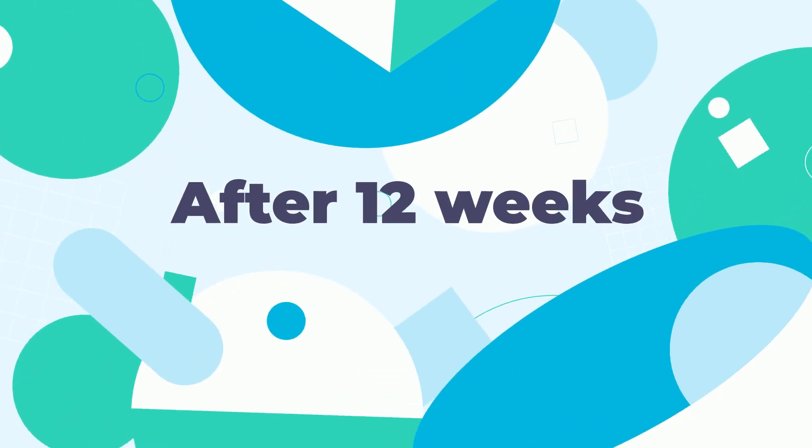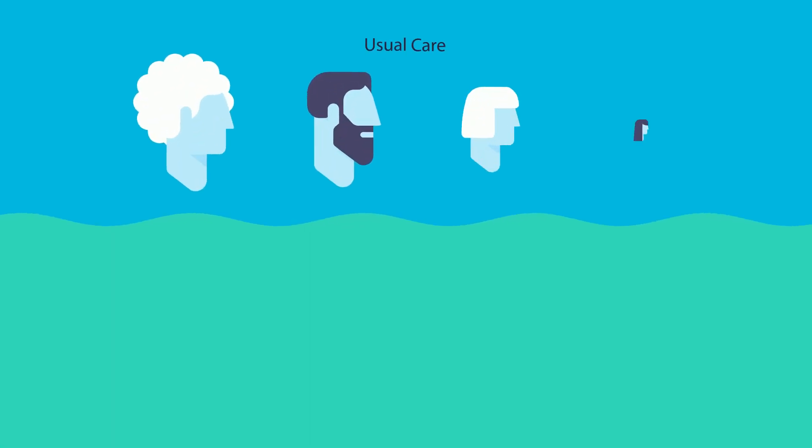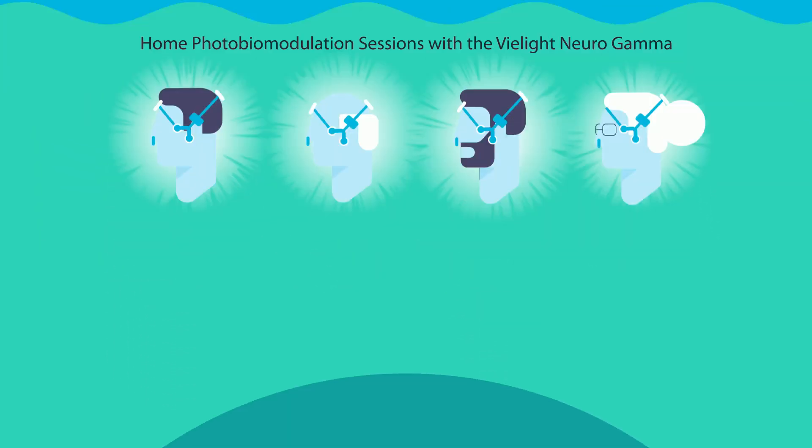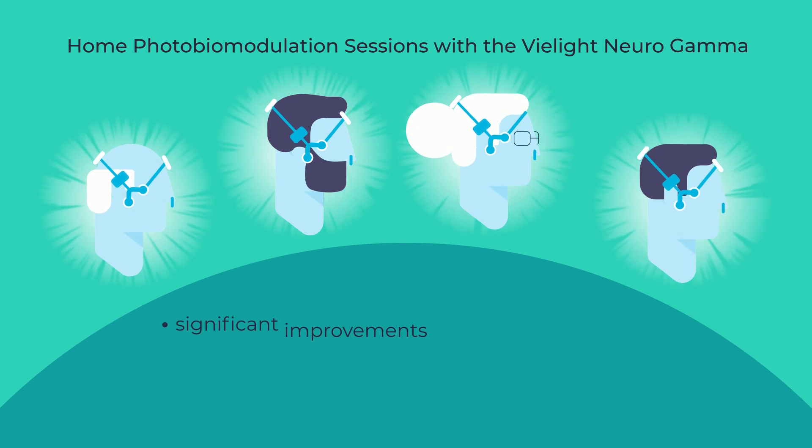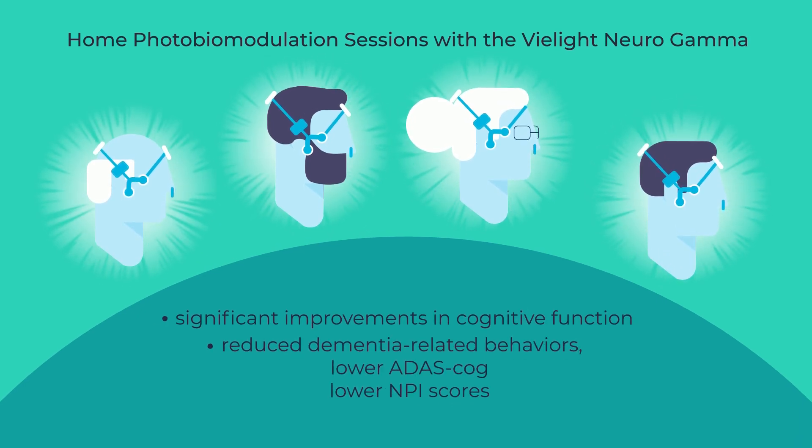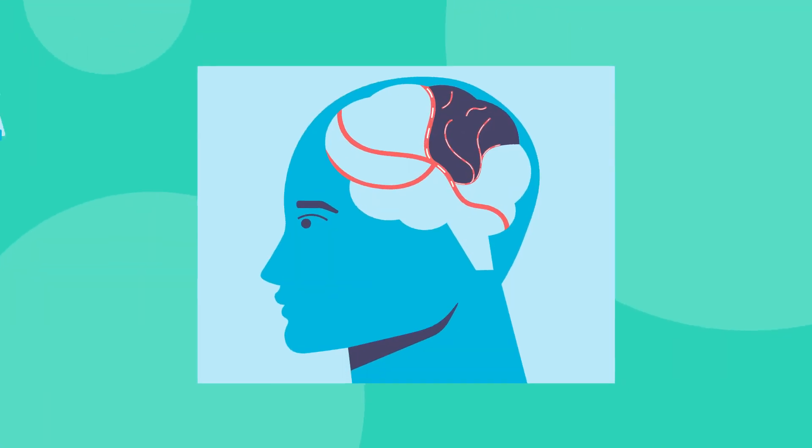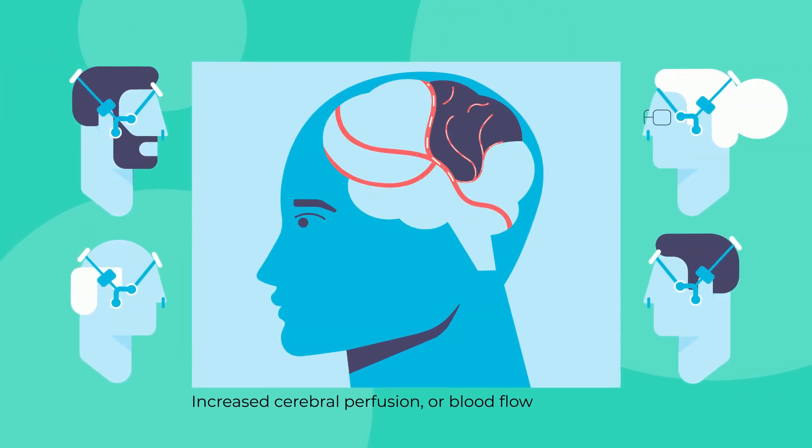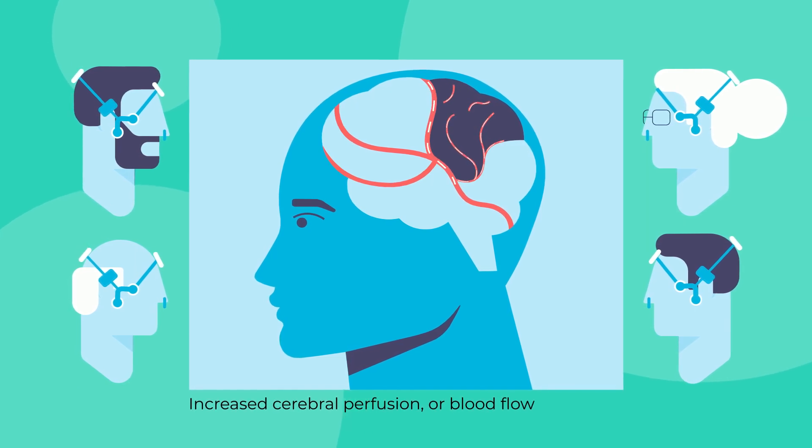The results were encouraging. After 12 weeks, the photobiomodulation group showed significant improvements in cognitive function and reduced dementia-related behaviors, as indicated by lower ADAS COG and NPI scores. Cerebral perfusion, or blood flow within the brain, increased, particularly in the parietal regions of the brain, where the light stimulation was concentrated.